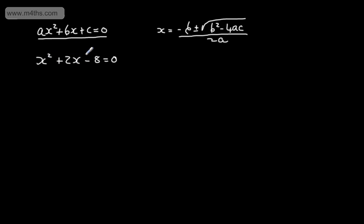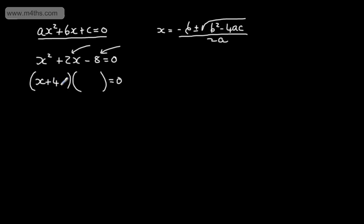Looking at this, I think I can factor it. Setting up our brackets, we need two numbers that multiply to give the c term, which is negative 8, and the same two numbers that add to give the b term, which is positive 2. That's going to be x plus 4 and x minus 2, so the solutions are negative 4 or positive 2. With that particular equation I can factor it — if you can factor it, go ahead and factor it. It's a lot easier than using the quadratic formula.